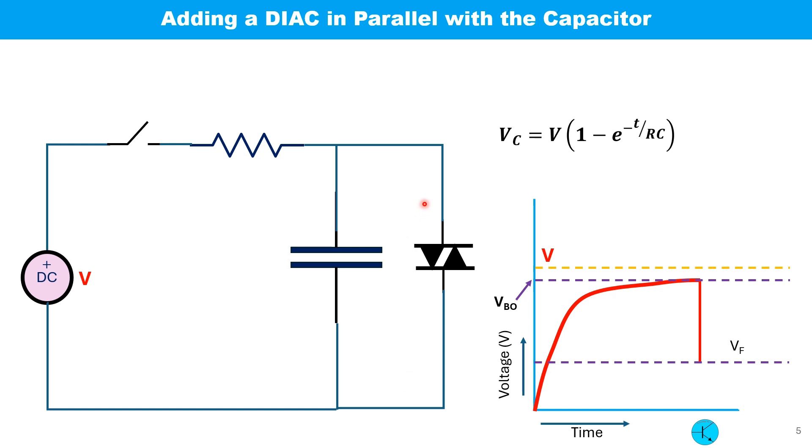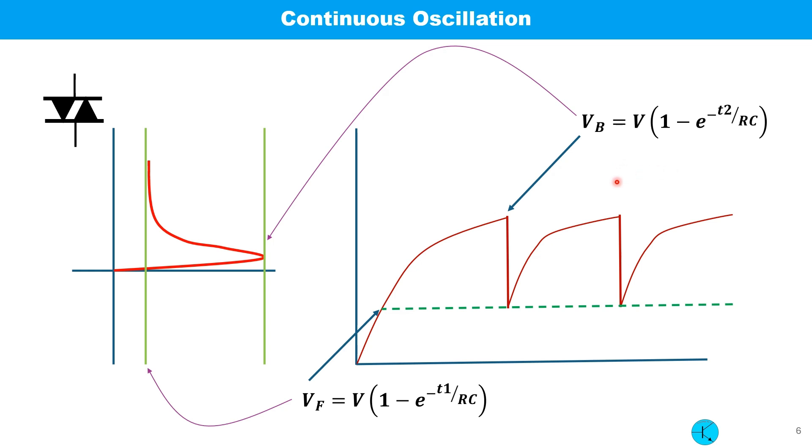Now, if we add a DIAC across the capacitor, what happens? It should be mentioned that the supply voltage must be higher than the breakover voltage of the DIAC. When the capacitor voltage reaches the breakover voltage of the DIAC, the DIAC conducts and the capacitor voltage goes down to the on-state conduction voltage, that is VF. The beauty of this circuit is it does not stop here. The capacitor starts to charge up to the higher voltage level. And it reaches the breakover voltage and then goes down. It continues. And we get our oscillation like this.